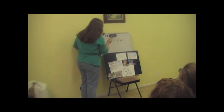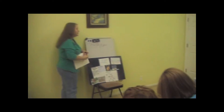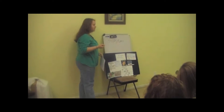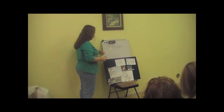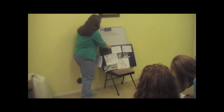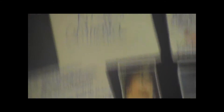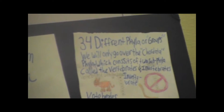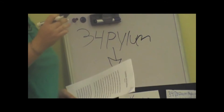There are 34 different groups, and it includes plants like fungus and trees, and there are also animals, which are in the kingdom Animalia. So we break those 34 phyla down and put them into one group called the Phylum Chordata.